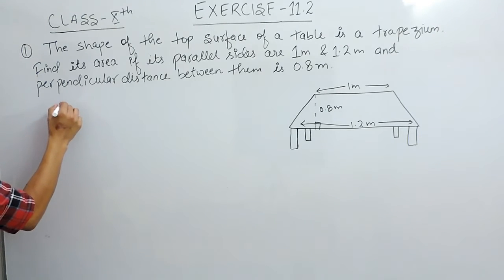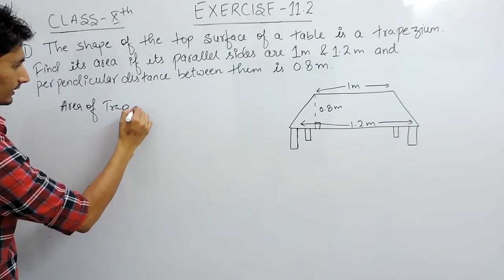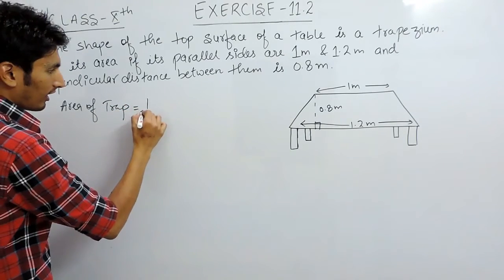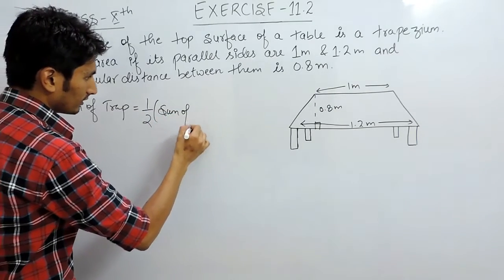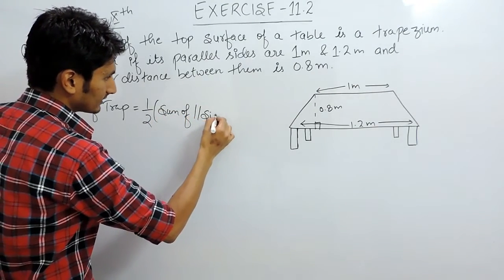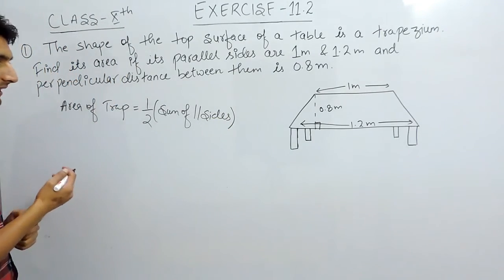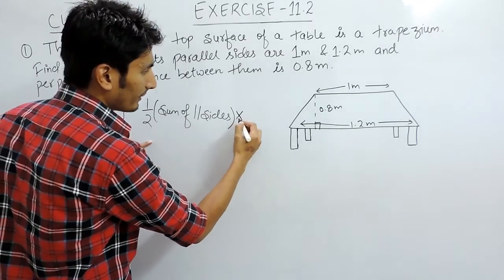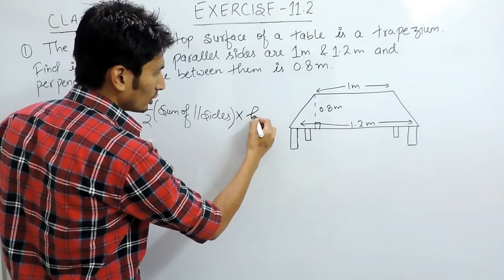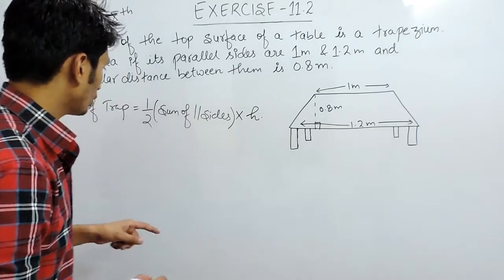We know that area of a trapezium is equal to half sum of parallel sides, multiplied by the shortest distance or the perpendicular distance between these two parallel lines.